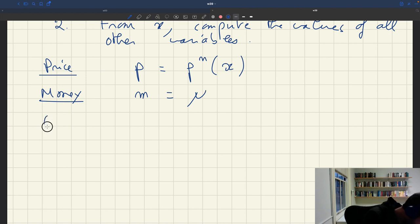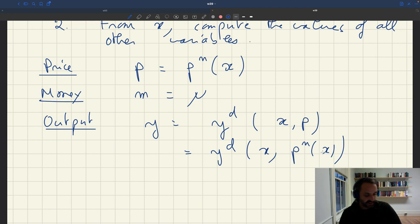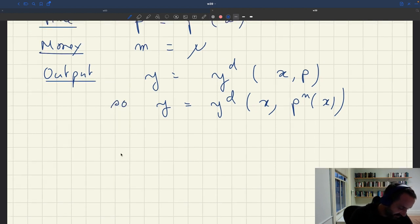How am I going to back out output? Well, that's not very hard. We know that output y is given by the aggregate demand, y^d, which depends on tightness x and the price p. But the price p is itself a function of tightness. So once I have tightness, I can plug it into my aggregate demand curve and I can get the output. So that's taken care of.